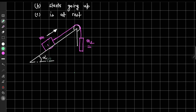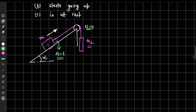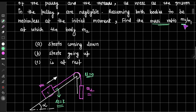We have an inclined plane making an angle of alpha with the horizontal, and two masses m1 and m2 connected using threads and a pulley. There is no friction between the pulley and the thread, so mu equals 0 there, but there is friction between mass m1 and the inclined plane with coefficient of friction k.